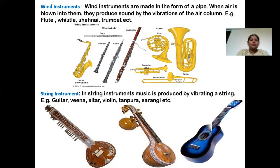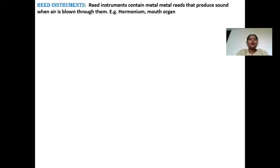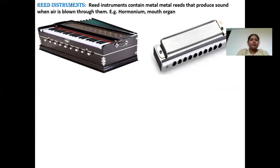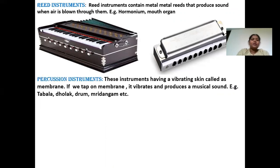The next type is called the reed instrument. The reed instrument contains metal reeds that produce sound when air is blown through them. Examples are harmonica and mouth organ, where the metal reed is fixed and air blown through them creates a melodious sound.